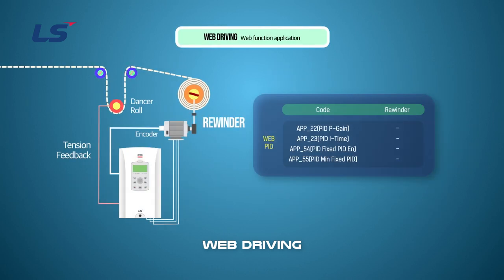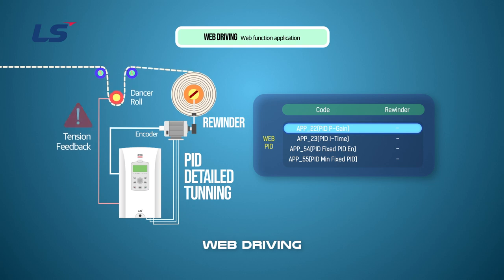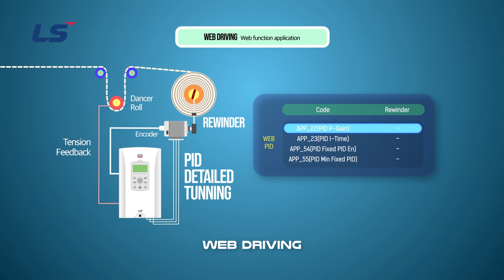During the trial operation, the P-gain for the dancer's reactivity was determined and the PID output value was set appropriately. Next, PID precise tuning is performed. As the size of the bobbin increases, the weight and inertia of the winder increase, so the characteristics of the system change. Changes in the characteristics of the system can lead to hunting by the tension feedback sensor. Therefore, it is necessary to change the PID gain. If you set the gain when the bobbin is at its maximum, it works normally in most areas.